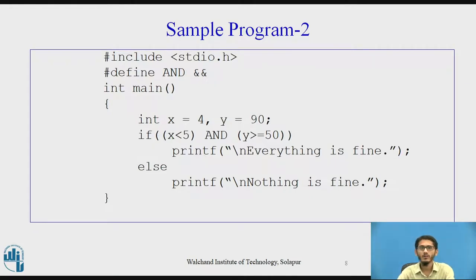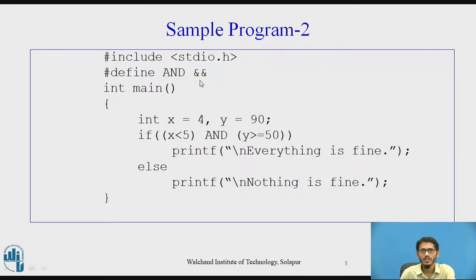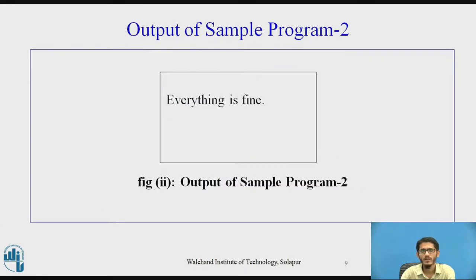Now let's see a sample program showing the points where a macro can be used. The first usage is to define an operator. For example, `AND` is a macro used for the logical AND operator — that is, ampersand ampersand (&&). In the program, `if x < 5 AND y >= 50` then it will print 'everything is fine'. So at pre-processing time, AND will be replaced with &&. The output for this program will be 'everything is fine'.